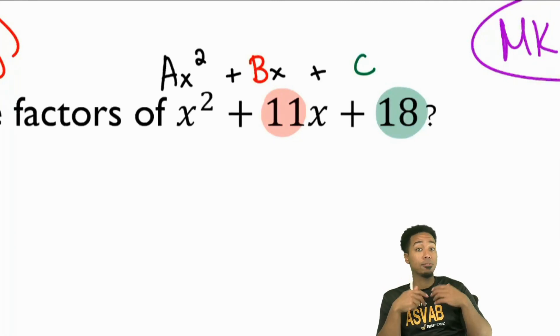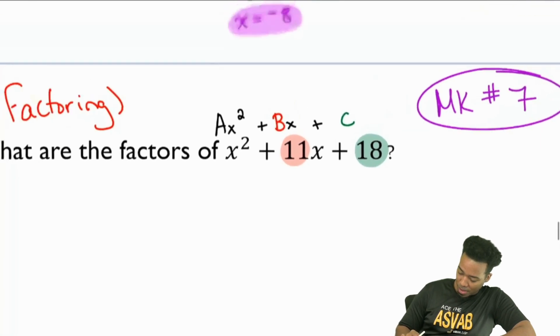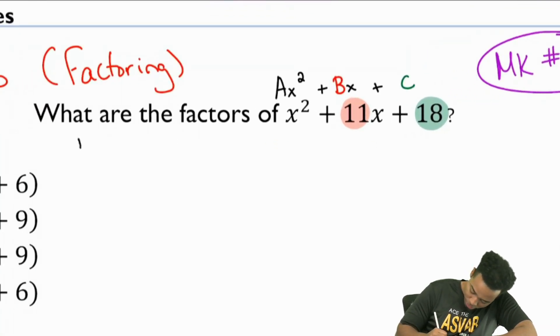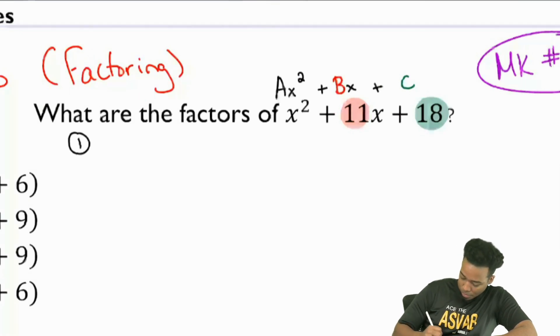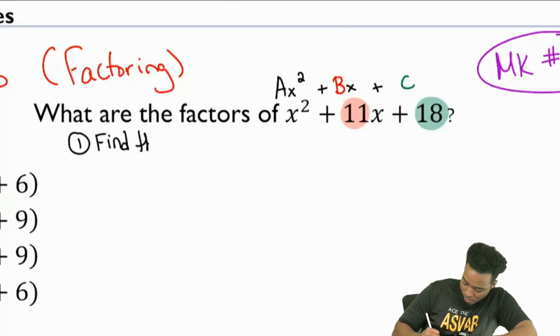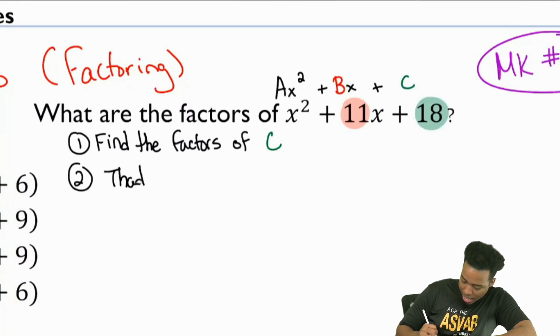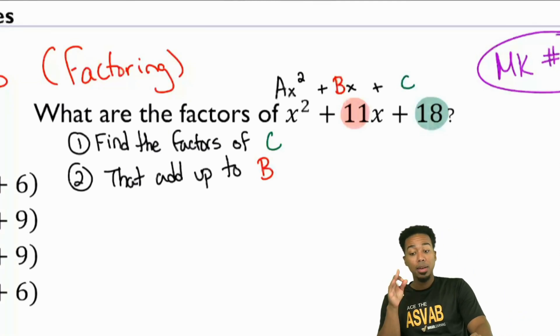Now that we've identified the way it's set up, all we need to do is know this process. The process to find the factors: Step one, find the factors of C that add up to B.